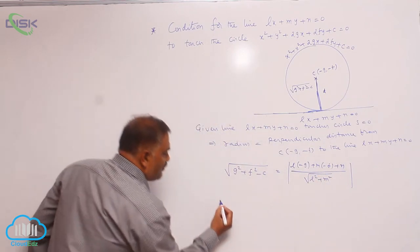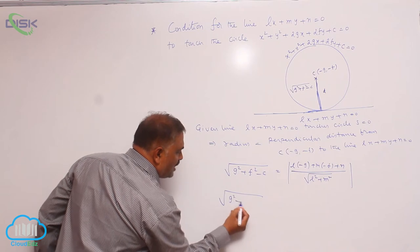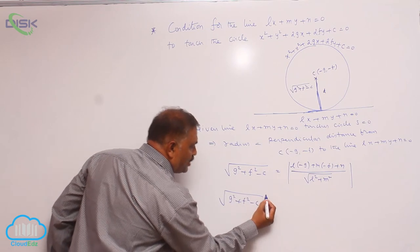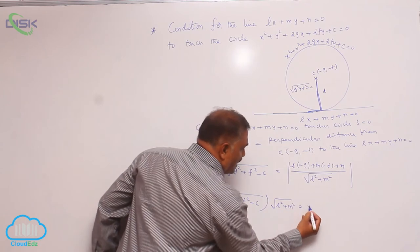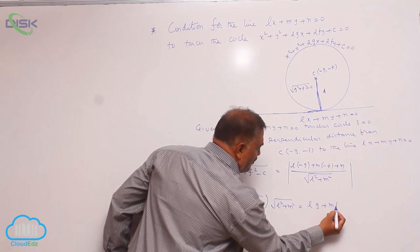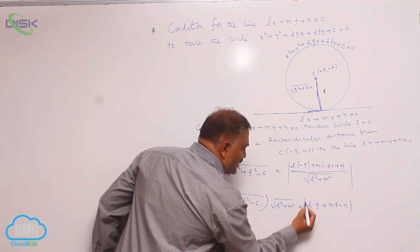So, cross multiplication gives root of g square plus f square minus c into root of l square plus m square is equal to L g plus m f minus n.